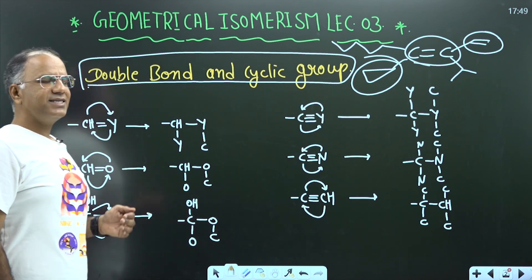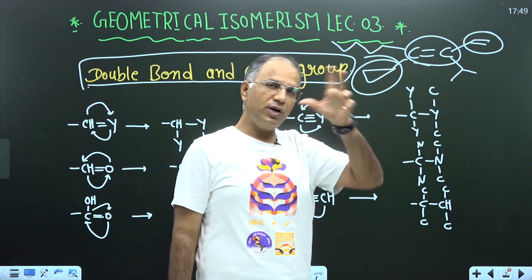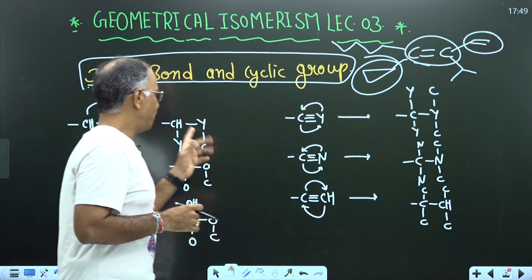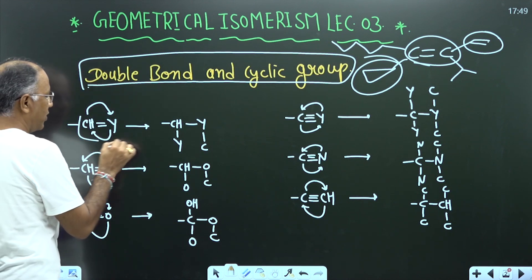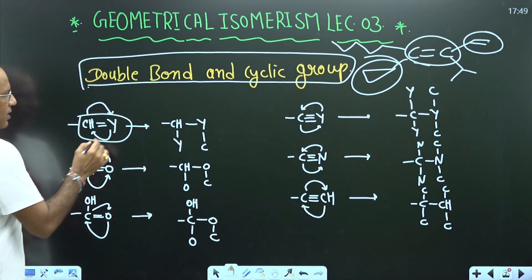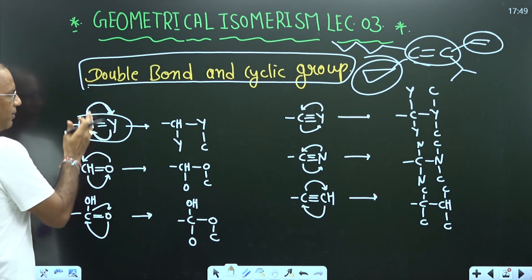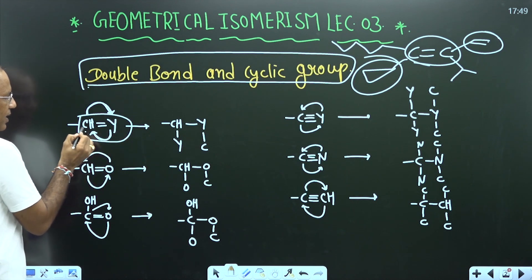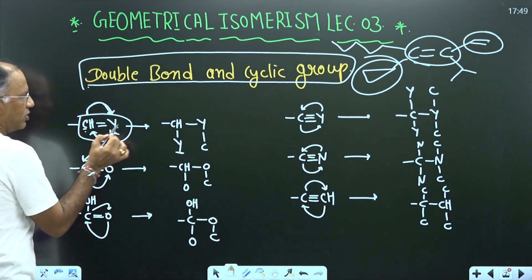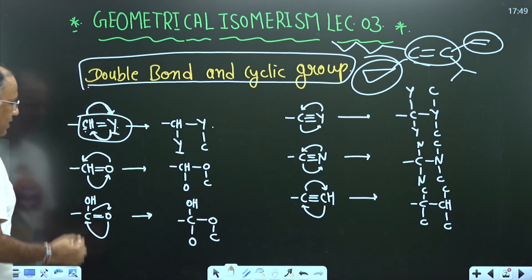EZ suggests that whenever there is a cyclic compound or double-bonded compound, first you have to convert it into a saturated compound, then you can compare for EZ. For example, whenever a double-bonded group is present, you have to convert it into saturated form. The rule is: you shift this atom here and this atom here, break the pi bond, and write this atom here and this atom here. In this way you convert a pi bond to saturated.